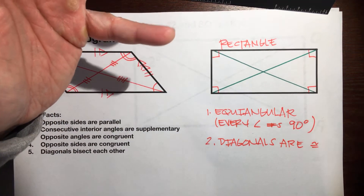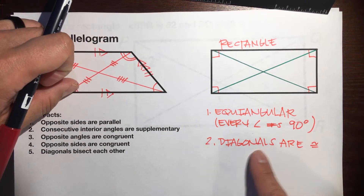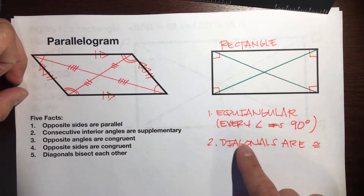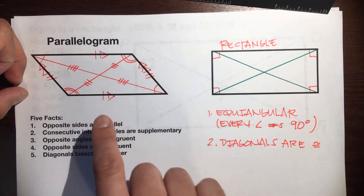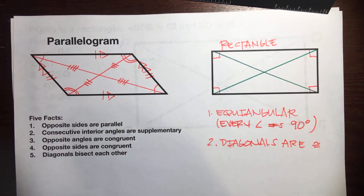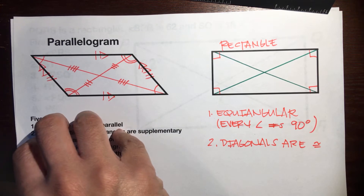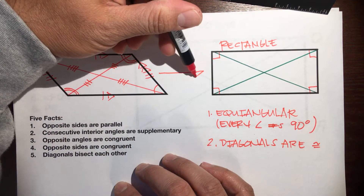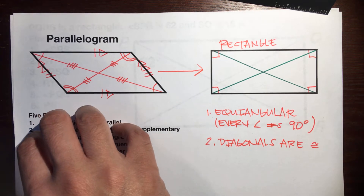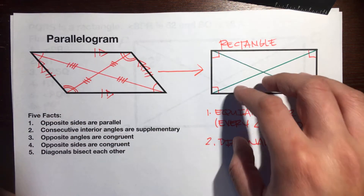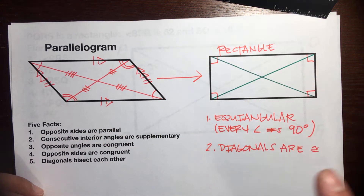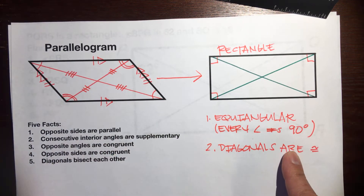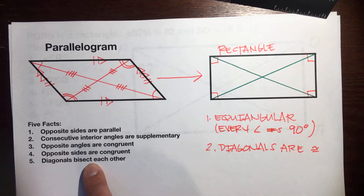That's important — there's a big difference here from the parallelogram. Since the diagonals are congruent, and because a rectangle is a parallelogram, the rectangle inherits all five parallelogram facts. So a rectangle has those five facts, plus it's equiangular, plus the diagonals are congruent.